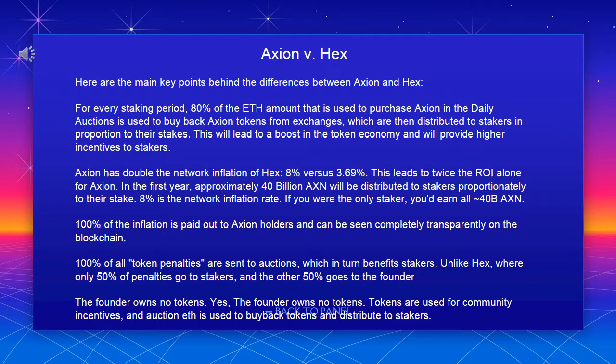Axion has double the network inflation of HEX — 8% versus 3.69% — leading to twice the ROI for Axion in the first year. Approximately 40 billion Axion will be distributed to stakers proportionately to their stake. If you were the only staker, you'd earn all 40 billion. 100% of the inflation is paid out to Axion holders and can be seen completely transparently on the blockchain.